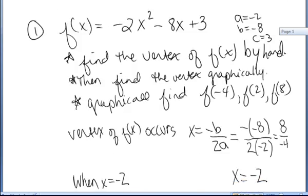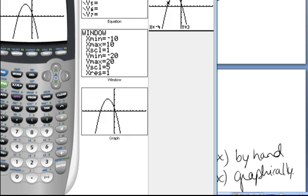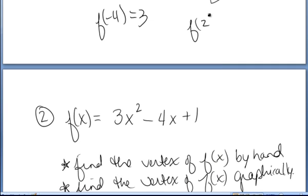Again, if I want to find f of 2, I hit trace, type 2, press enter. It puts my cursor right on that point, and it says, when x is 2, y is negative 21. So, f of 2 is negative 21.